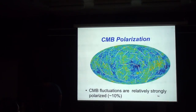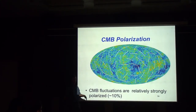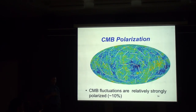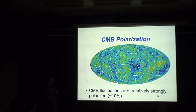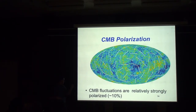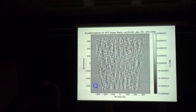The CMB is also polarized. Photons carry intensity and a polarization state, and the CMB is actually quite strongly polarized — almost on the order of 10%. Most astrophysical sources are polarized at only a few percent, so 10% is actually quite strongly polarized. WMAP measured the polarization, drawing the orientation of the polarization angle across the sky. We also measure this with SPT.